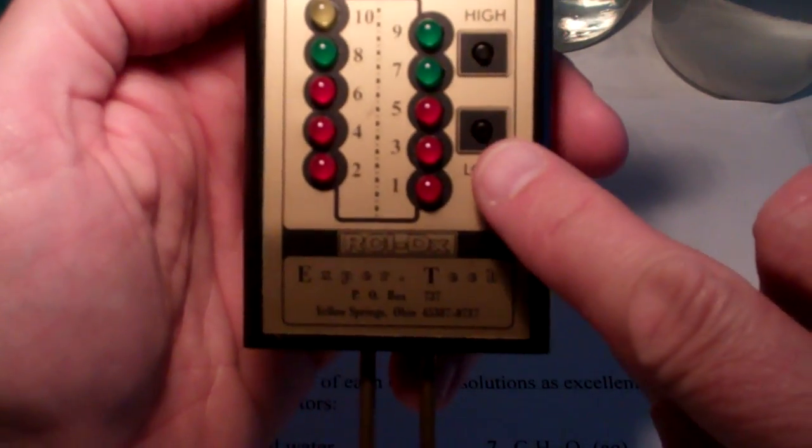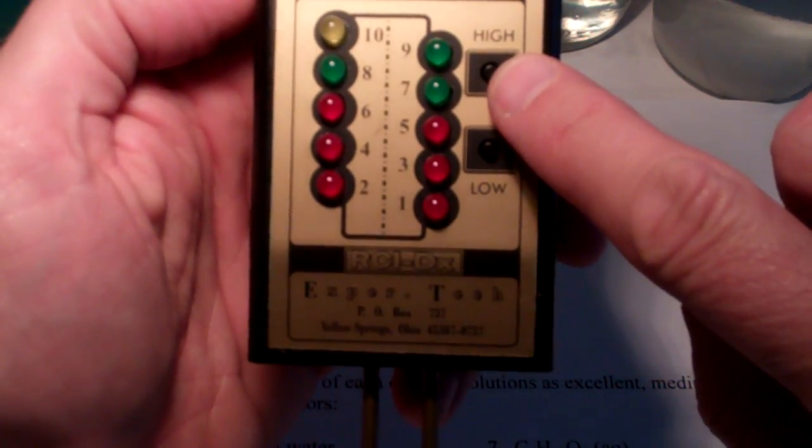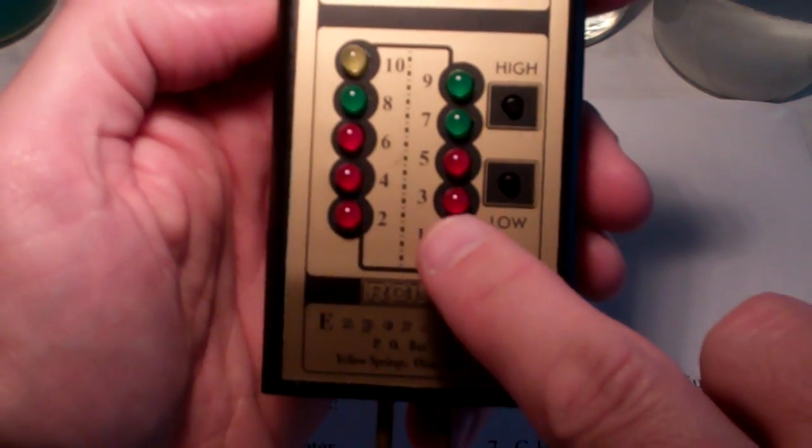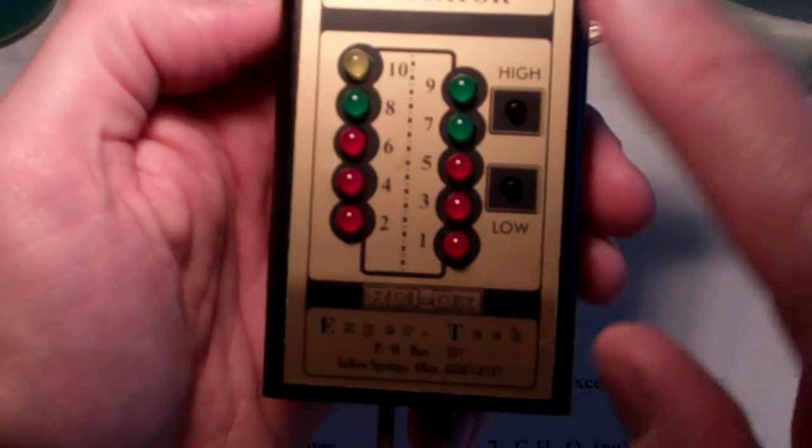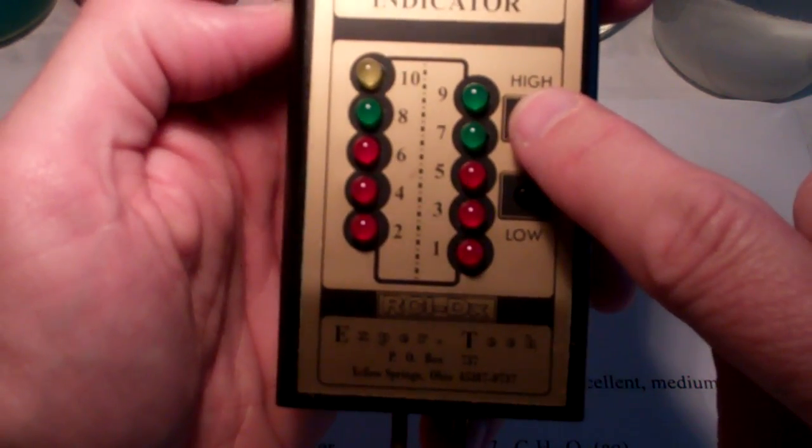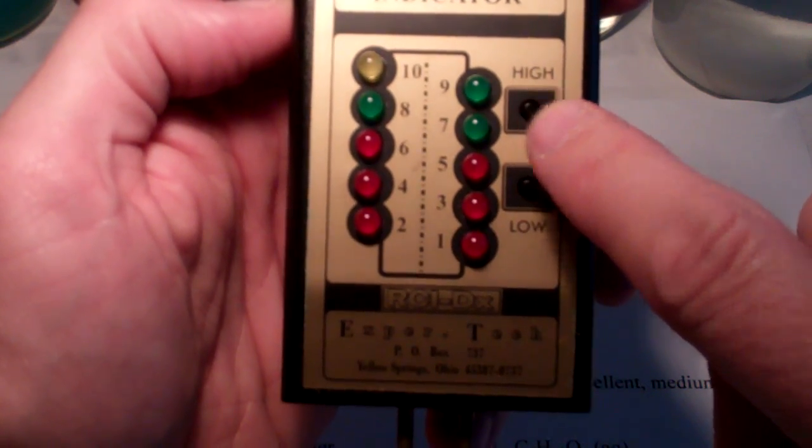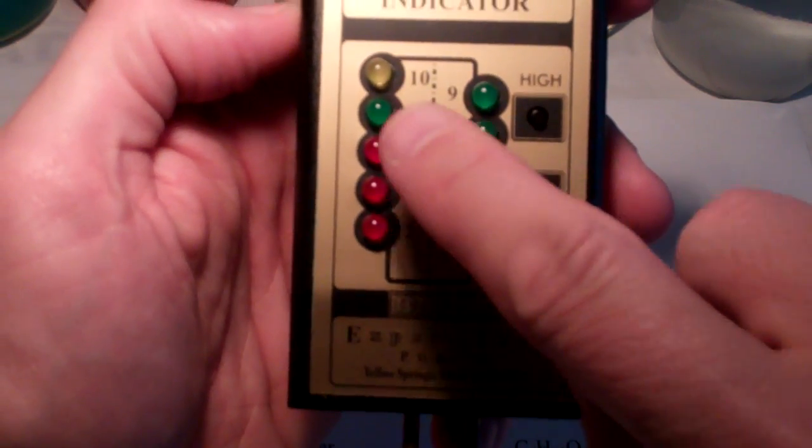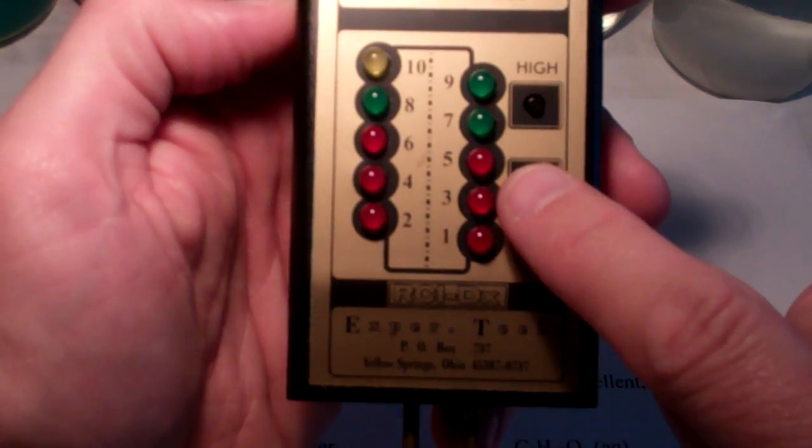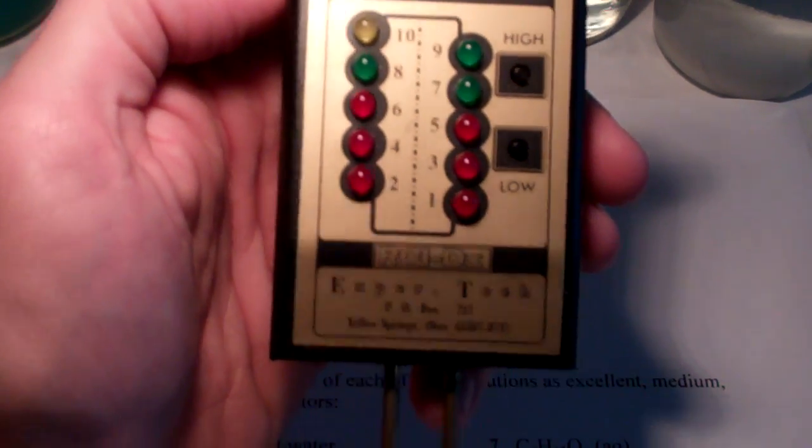So the meter has a low indicator and a high indicator. When we press low, we'll count up from 1 to 10. When we press high, we'll multiply these values by 10. So if I press the high button and the 8 lights up, then that would be a conductivity of 80. If I press the low button and the 8 lights up, that would be a conductivity of 8.